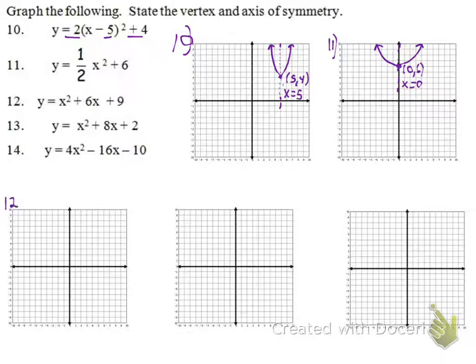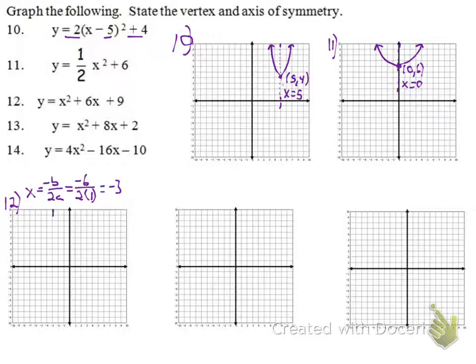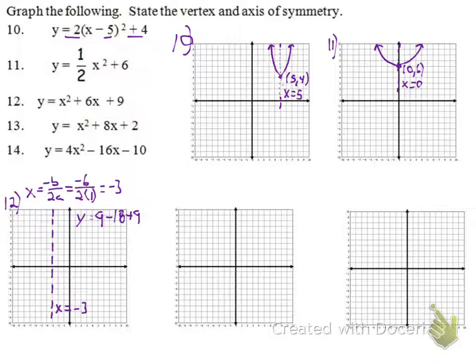Number 12, we've got to do a little work. We find the axis of symmetry first using negative b over 2a: that's negative 6 over 2 times 1, which equals negative 3. So x equals negative 3 is our axis of symmetry. We plug negative 3 into our equation and get y equals 9 minus 18 plus 9, which is y equals 0. So our vertex is the point negative 3, 0. The coefficient is positive, so it opens up.